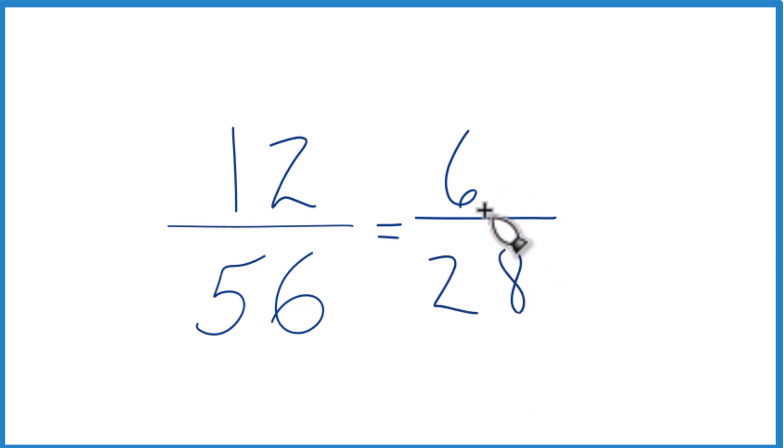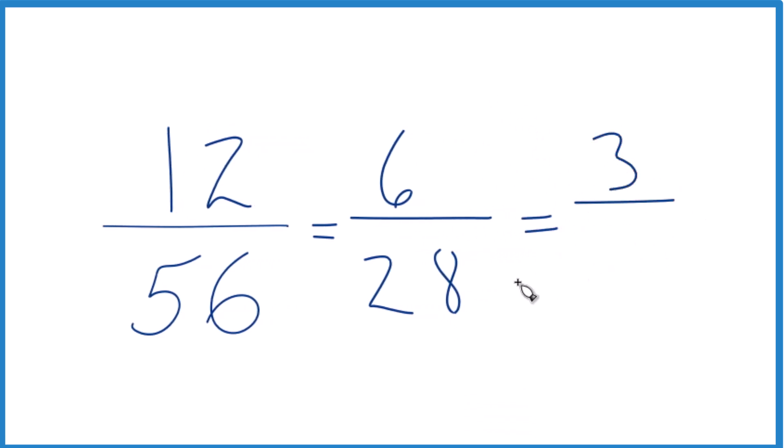So it's a little bit better, but we still have two even numbers. We can reduce this even further. Let's divide 6 by 2. That'll give us 3. 28 divided by 2 is 14.